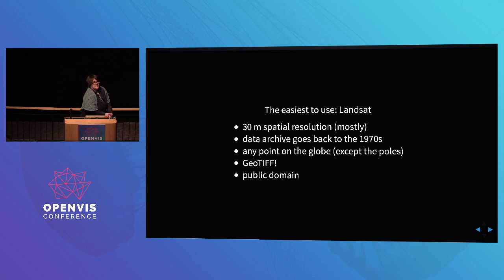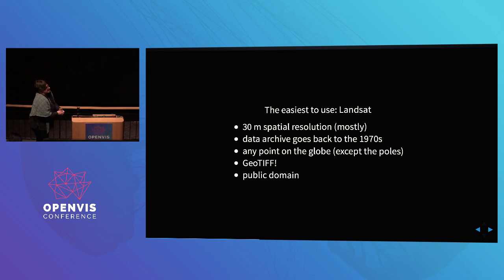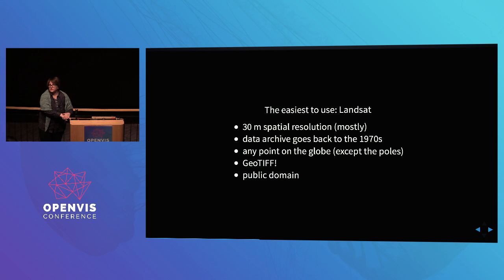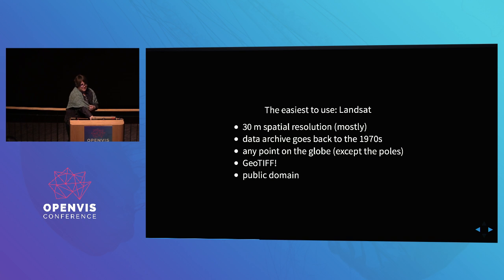The easiest satellite data to use by far is Landsat. The nice thing is it's all free. Spatial resolution is 30 meters - a pixel is basically a 30 by 30 meter square - which is good enough for many things, like the images I showed earlier. Not good enough for monitoring your house, but anything a little bigger, yes. It has a data archive going back to the 1970s, which is great. The data is published as GeoTIFF - basically a TIFF image with geo-information.